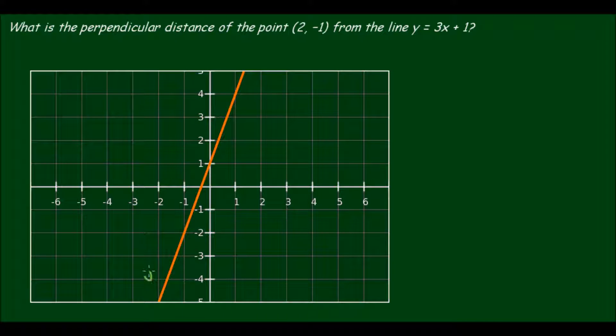So this orange line is the line y = 3x + 1. And drawn in yellow here is the point (2, -1). And if I draw a dotted line that is perpendicular to the orange line and it passes through the point.